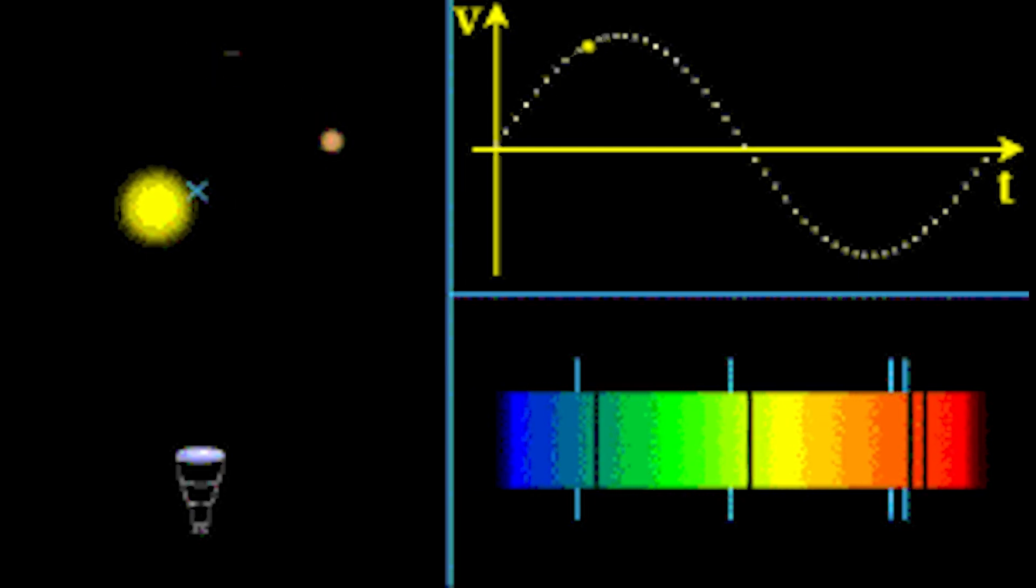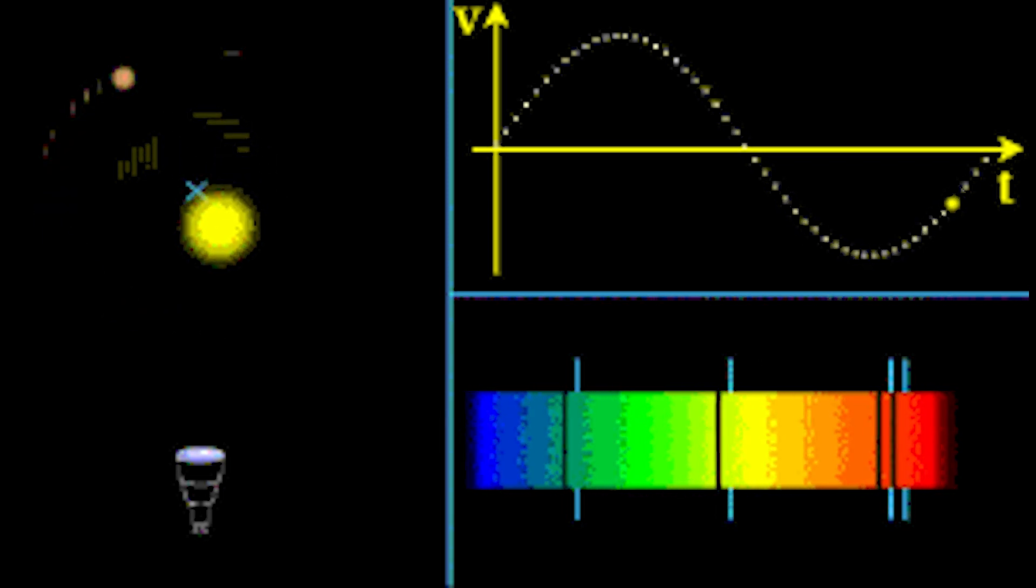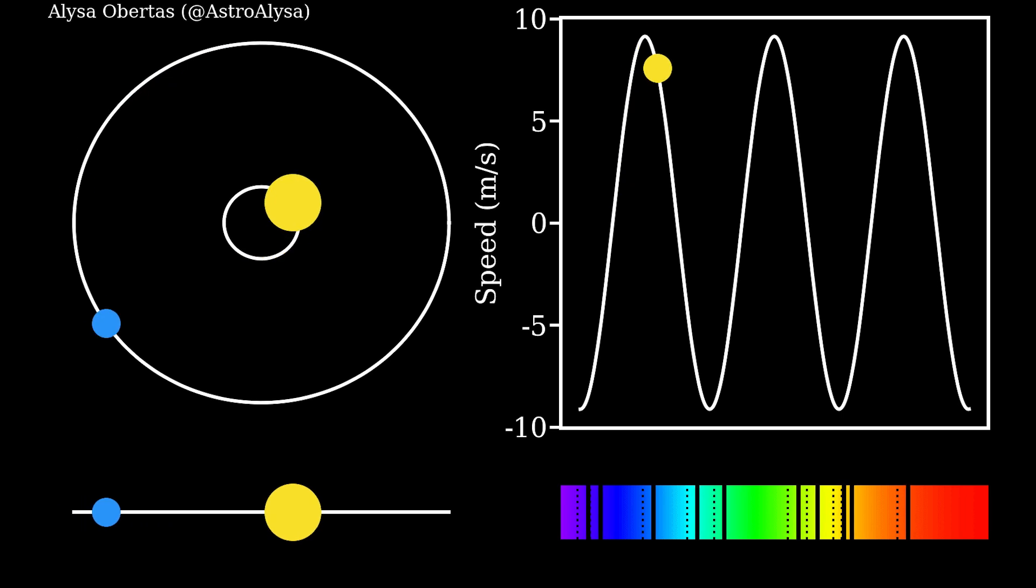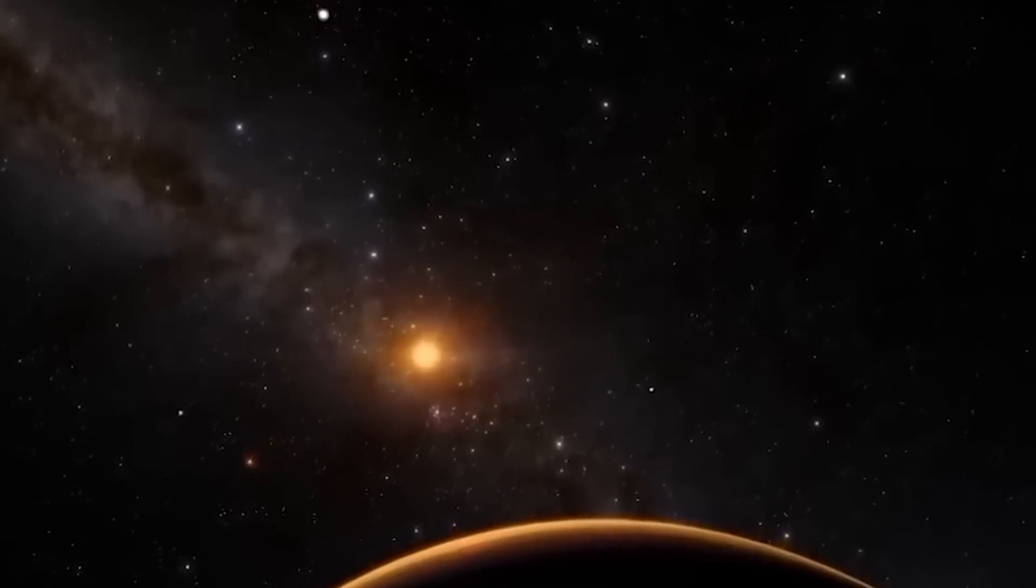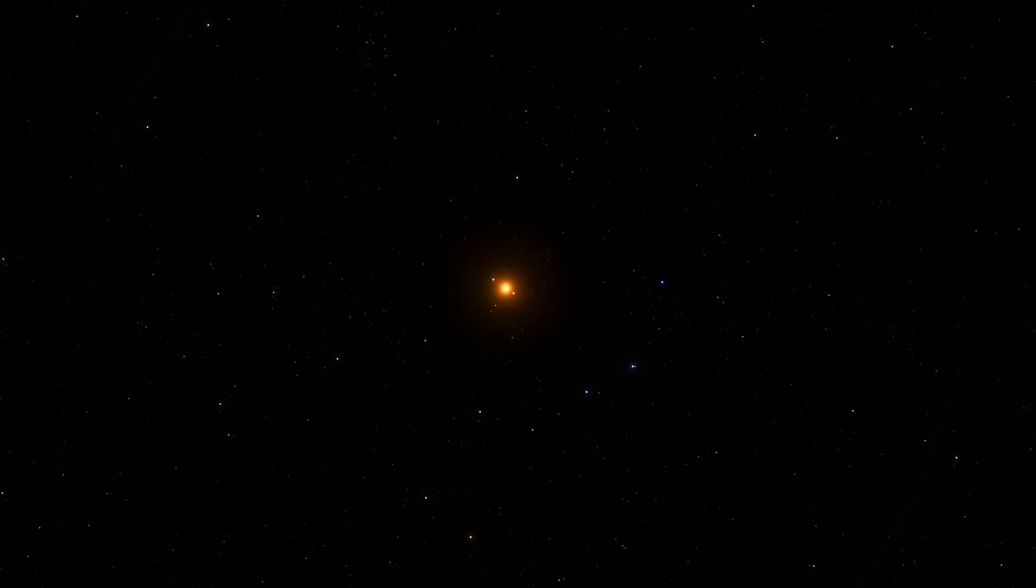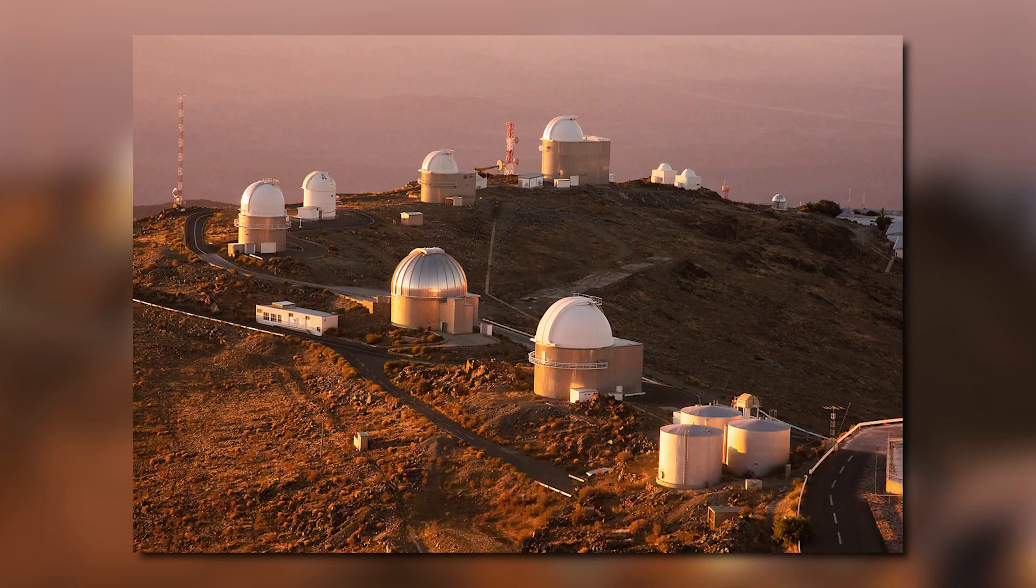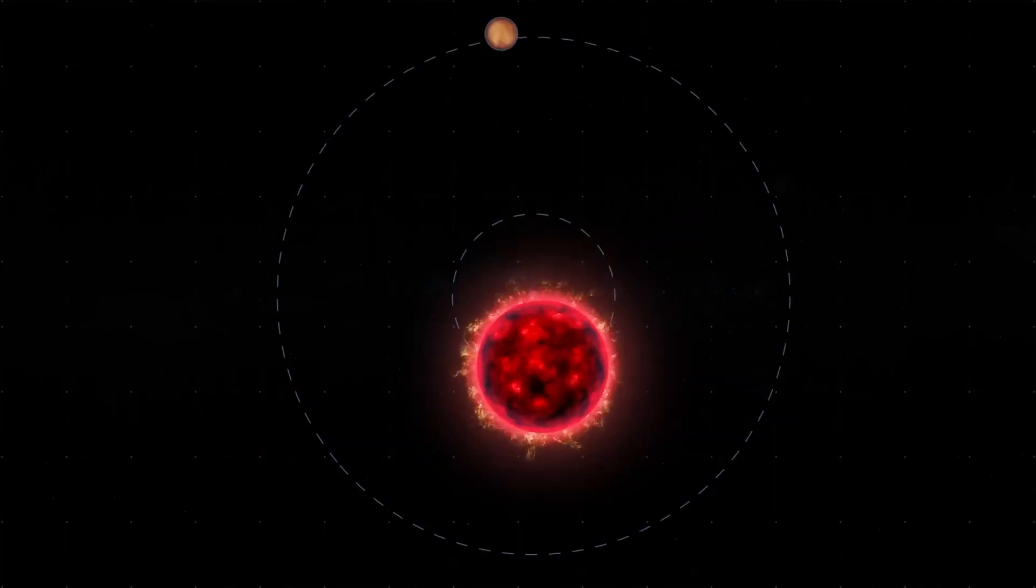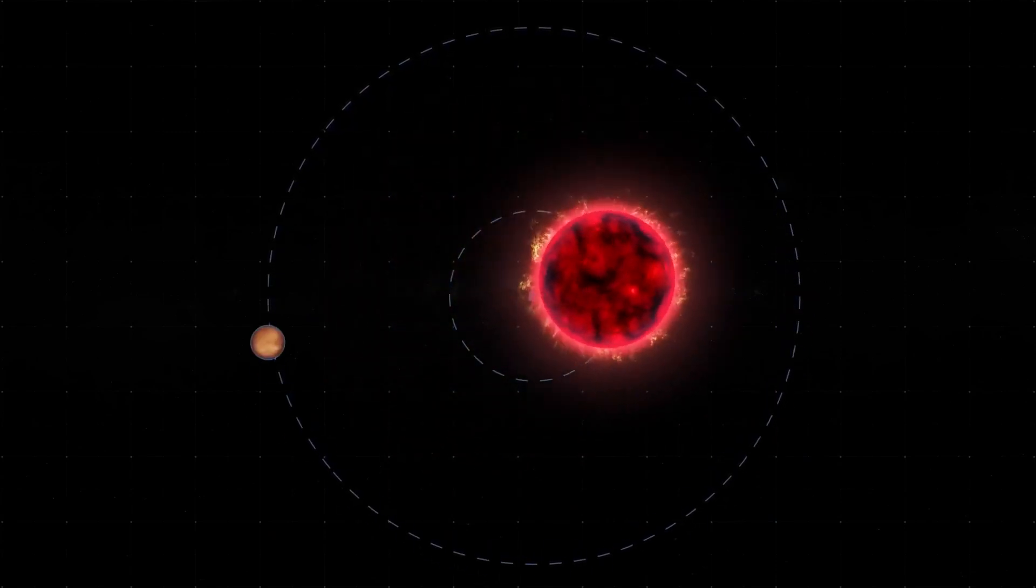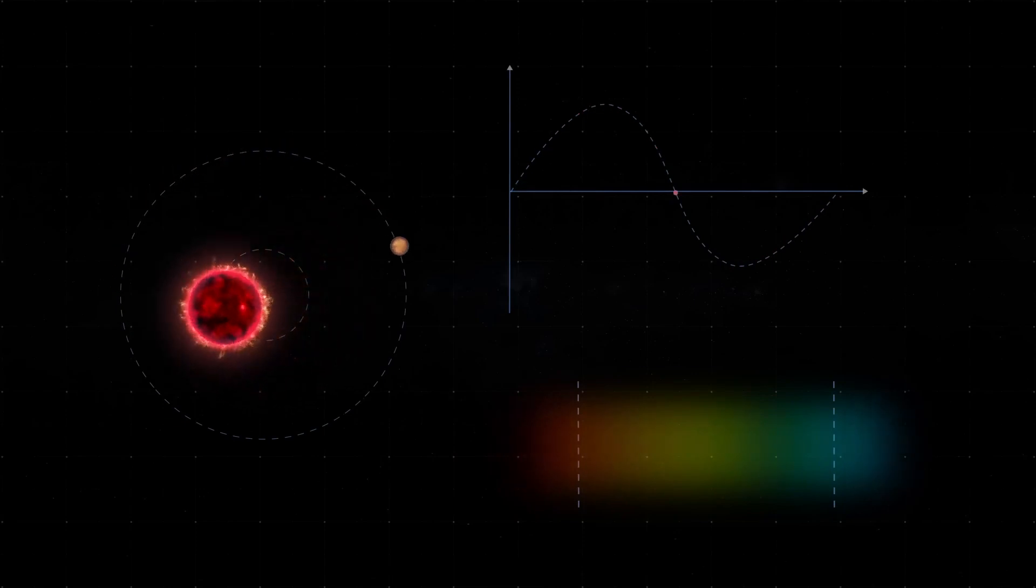The discovery of Proxima b was made using the radial velocity method, also known as the Doppler spectroscopy technique. This method involves measuring the periodic variations in a star's radial velocity caused by the gravitational pull of an orbiting planet. In the case of Proxima b, astronomers observed Proxima Centauri using the high-accuracy radial velocity planet searcher HARPS spectrograph at the La Silla Observatory in Chile. Over a period of several years, they detected periodic variations in the star's radial velocity that indicated the presence of an orbiting planet. The data from these observations were analyzed to determine the planet's mass and orbit as well as its potential habitability.